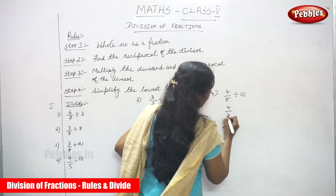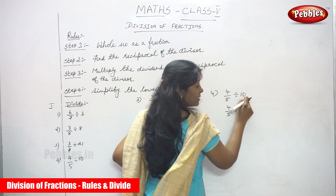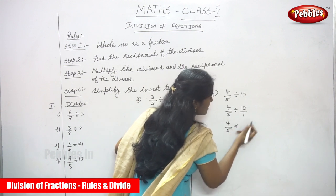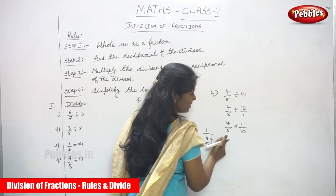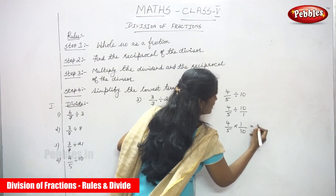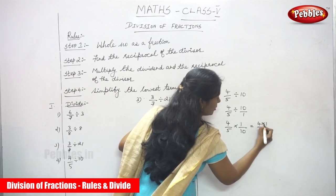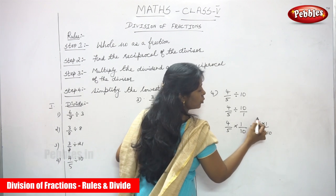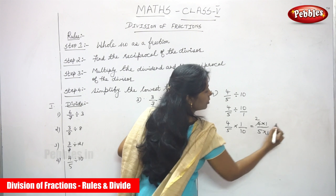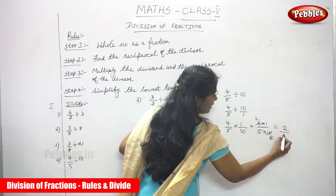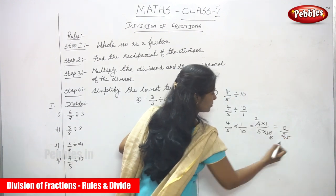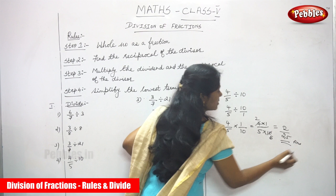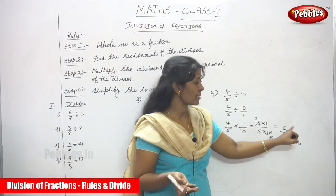Fourth sum: 4/5 divided by 10. Here 4/5 is a fraction and 10 is a whole number. Convert 10 to a fraction: 10/1. The dividend is 4/5 and the reciprocal of the divisor is 1/10. Multiply: 4 × 1 over 5 × 10. Cross-cancel: divide 4 and 10 by 2, giving 2 and 5. So 2 × 1 over 5 × 5 = 2/25. The answer is 2/25.